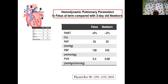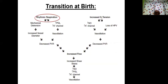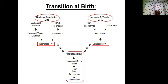When measuring pulmonary parameters, comparing near-term fetus to a three-day-old neonate, the pulmonary arterial wall thickness changes from 6% to 3%, pulmonary arterial pressure drops from 55 to 20, pulmonary blood flow increases from 138 to 245, and pulmonary vascular resistance falls significantly. As soon as the baby is born, rhythmic respiration begins and oxygen tension builds up in the alveoli — both factors decrease PVR, increasing pulmonary blood flow and causing vasodilation in the pulmonary bed.